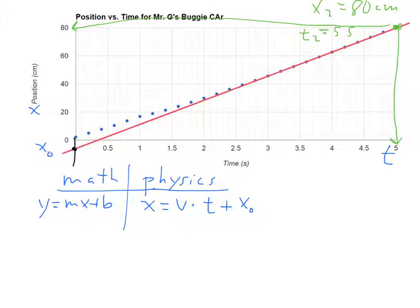Now what's another good data point that we might use? How about this one right here? I'm picking that one because it's occurring at an intersection of the grid lines. And so it looks to me like this one, we'll call it x₁, equals 20 centimeters. And the time for that, t₁, is 1.5 seconds.